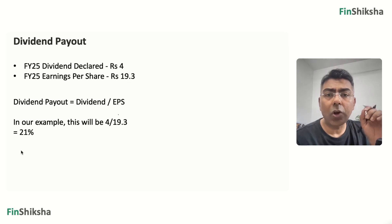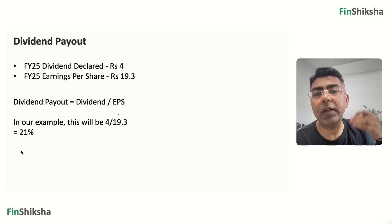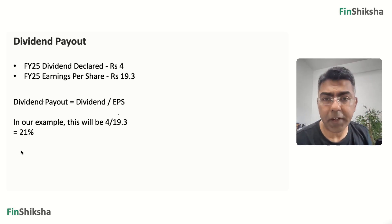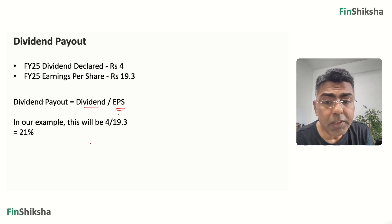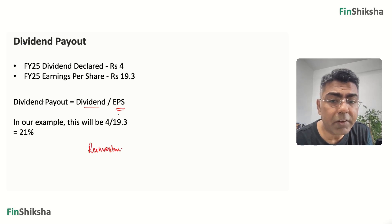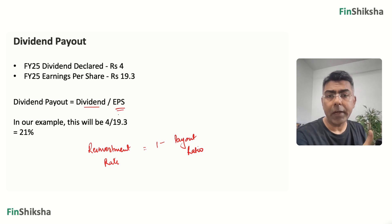The second term is dividend payout — how much money out of its profit has the company distributed as dividends. Dividend payout is dividend divided by earnings per share, basically total dividend paid divided by net profits. We also note that the reinvestment rate is 1 minus the payout ratio. The amount not paid out as dividend gets reinvested back in the firm.